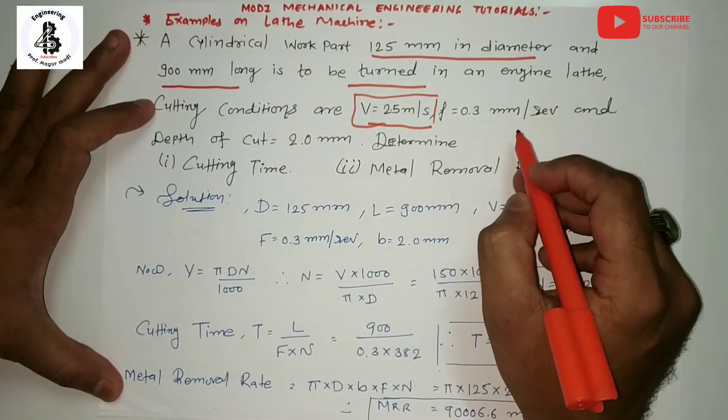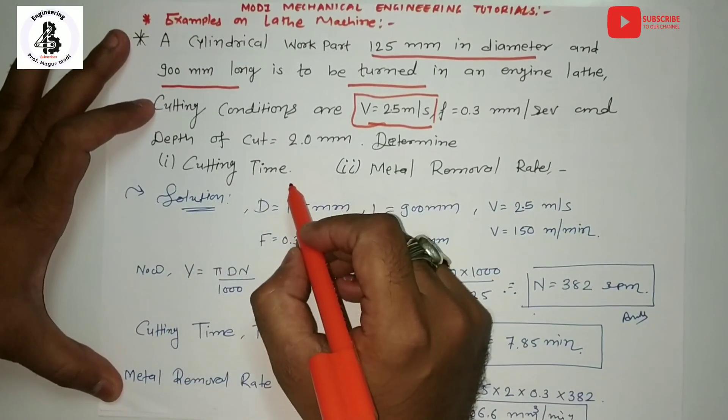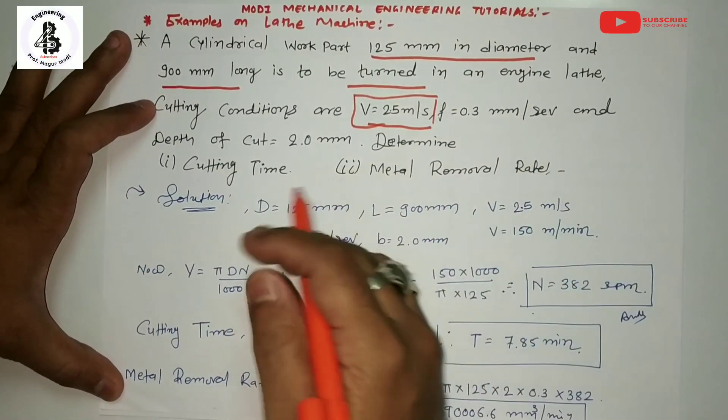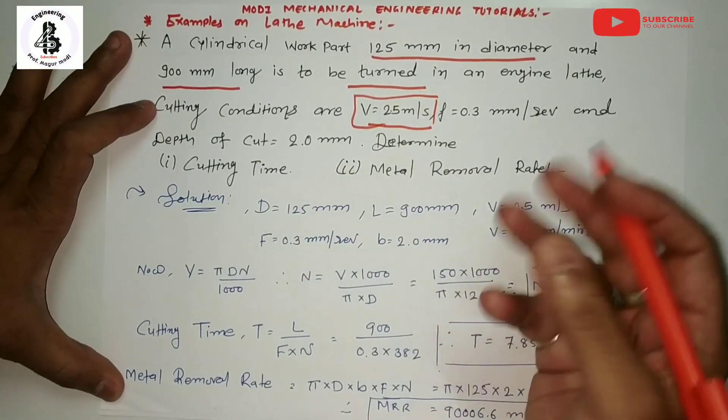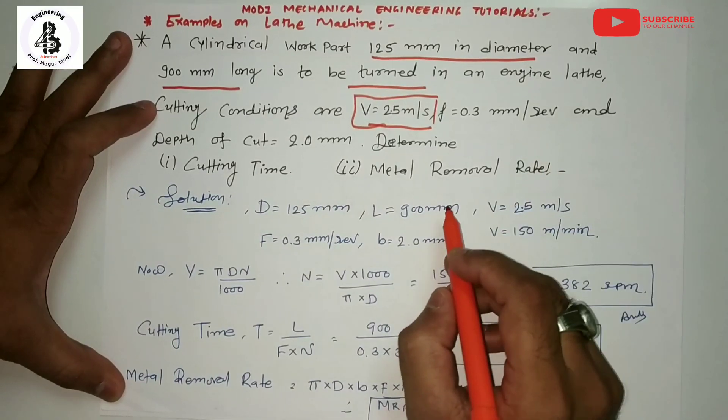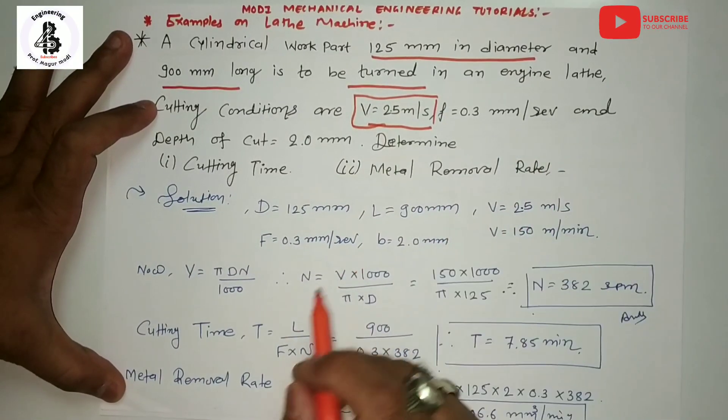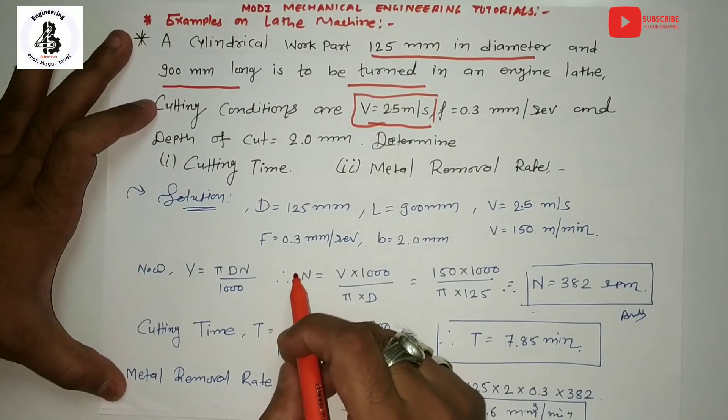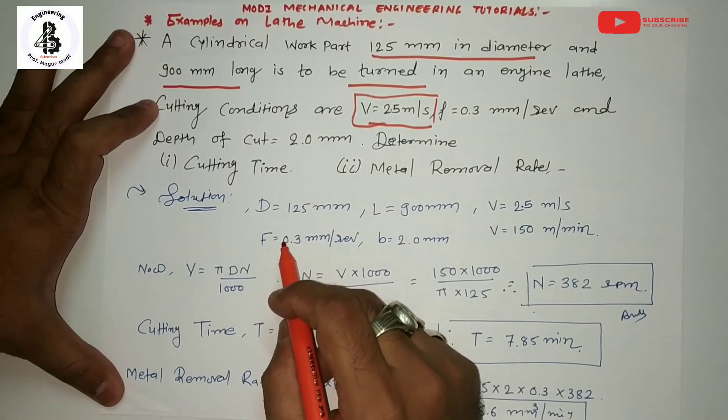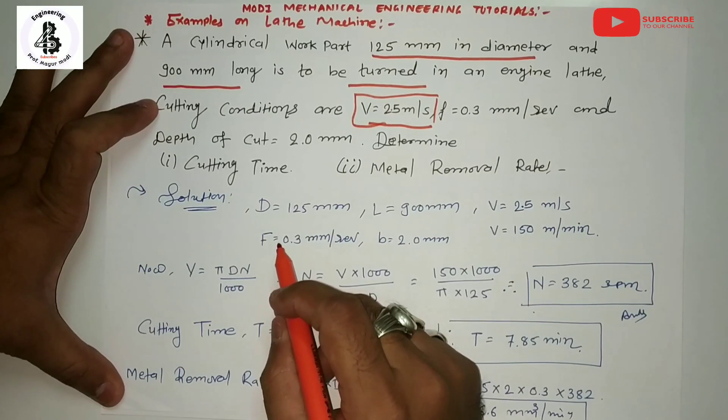For all these working parameters on the lathe machines, determine cutting time and the metal removal rate. Before starting the solutions, I will suggest you refer to the links given in the descriptions for the detailed study of these lathe parameters: feed, speed, depth of cut, and machine time. Now I would like to solve the problem.